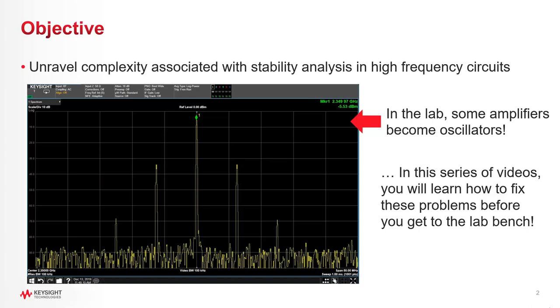There's nothing worse than spending months designing an RF circuit and then putting it on the bench and seeing an output spectrum that looks something like this—multiple tones where there should be only one tone. And until you fix this problem, you're really kind of stuck. You'll have no good results to show your manager. You can't prototype your system and you're going to have a pretty stressful time as a design engineer.